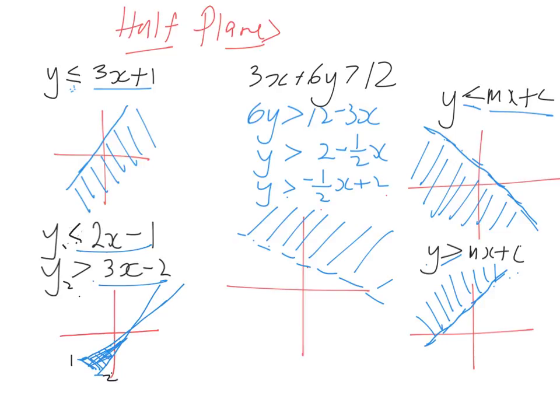To graph half planes or anything about half planes, we want it written in the form y equals mx plus c. If it is less than, we draw a line at mx plus c and then we shade. Greater than, we shade above. If it's greater than or equal to, so if we introduce that, we have a solid line. If it's not, if it's just less than, like what we're seeing here, or greater than, then we draw a dotted line. So to draw it, we draw an equation to this line, 3x plus 1 gets drawn. We're saying y is equal to or less than, it's a solid line, and then we shade everything underneath that line.